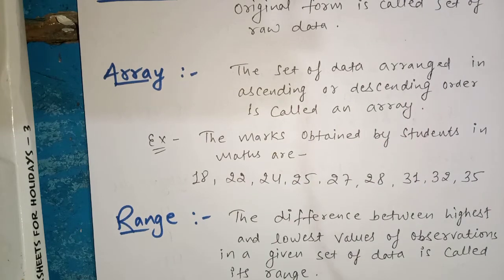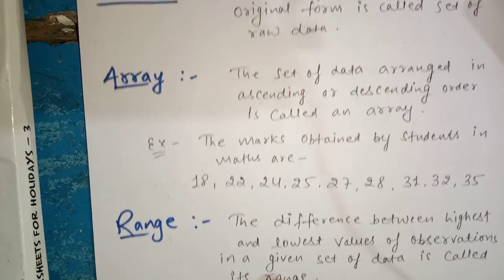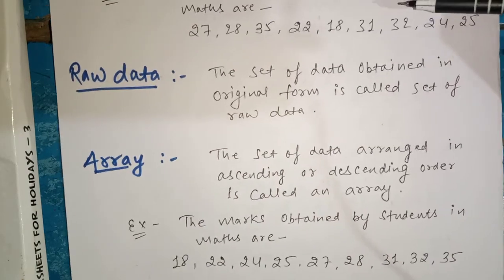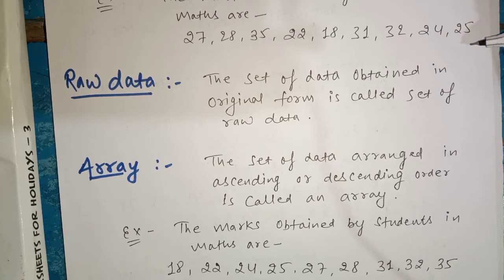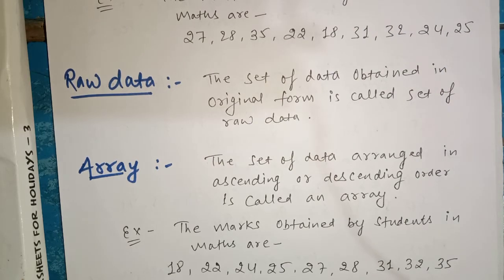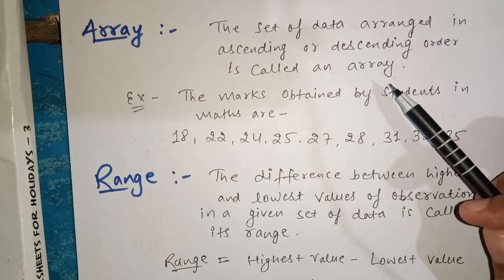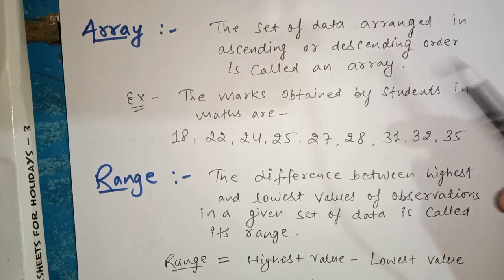So any set of information arranged in ascending or descending order is called an array. As you can see clearly here, the raw data is mixed — like 27, 28, 22, 18, 35 — it is not in any particular order. But if we give it a particular pattern and arrange it in ascending or descending order, what will it be called? Array. In ascending order means increasing order, and in descending order means decreasing order. When we arrange the raw data in either order, we call it an array.